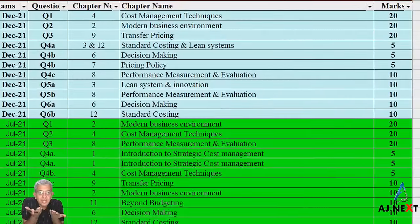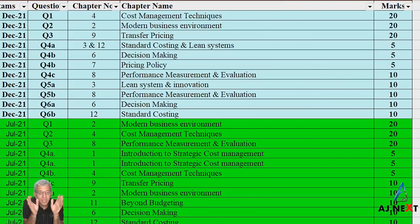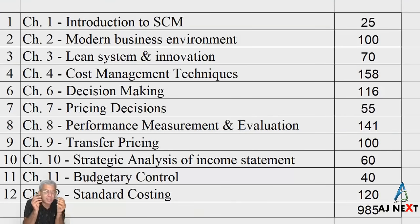One more thing: there were many questions in the past that were a combination of two or more chapters. Such questions I have equally divided and put into the respective chapters. For example, if a question is a mixture of chapter one and chapter eight and is worth 10 marks, then five marks go to each chapter. I took each question of each attempt, noted which chapter and which marks, created this entire sheet, then summarized it into chapter-wise bifurcation.